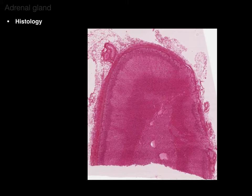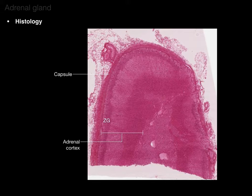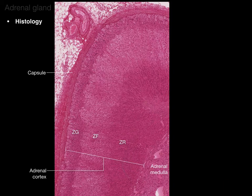The histology of the adrenal gland shows the adrenal capsule, then the adrenal cortex with its three areas — zona glomerulosa, fasciculata, and reticularis — each with different staining. Right in the middle is the adrenal medulla. Zooming in, you can see all four regions clearly.